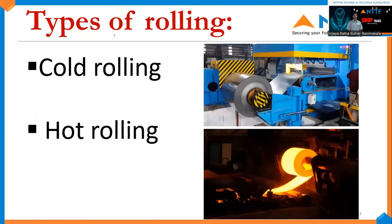As we all know, there are two types of rolling. One is the cold rolling system and the second one is the hot rolling system. As we see in the figure, the first one is cold rolling because it is in cold condition, and the second one is in hot rolling condition. Here we can observe the coil which is glowing — that is the hot rolling system.